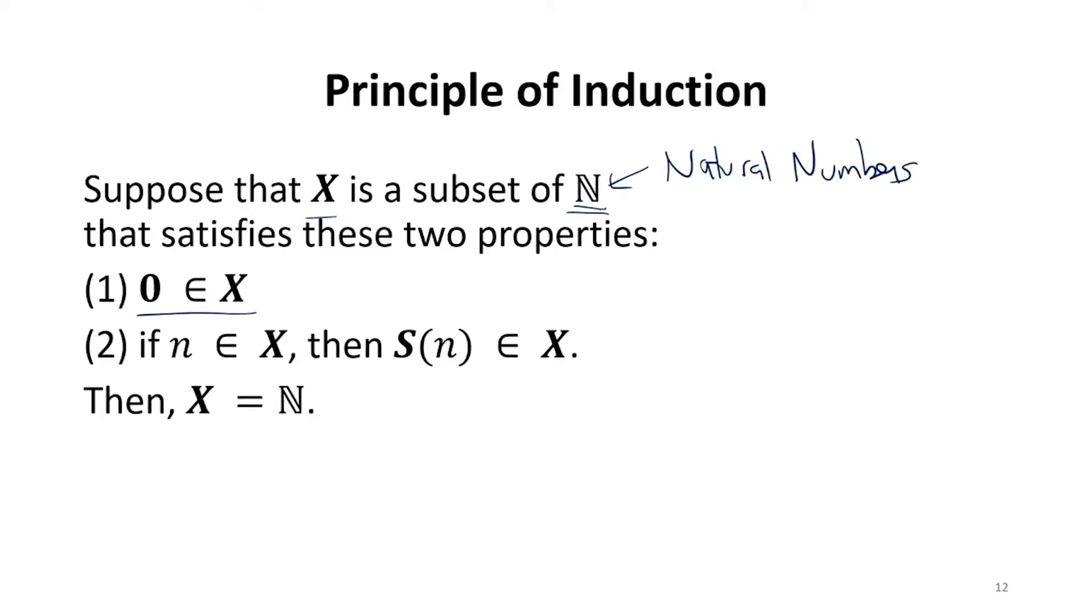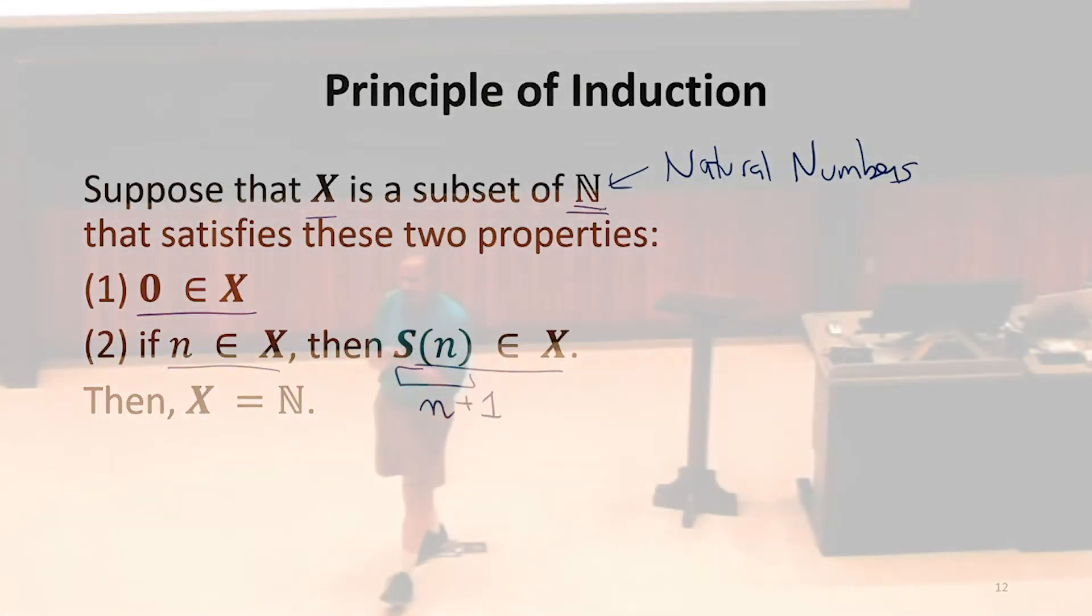So it's a subset of the natural numbers. And it satisfies two properties. It contains zero. And if it contains some n, it also contains the successor of n. So this is actually using the first definition. You can also think of this as just n plus one. If it contains n, it contains the successor of n. If those two things are true, then that set X must be the natural numbers.